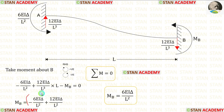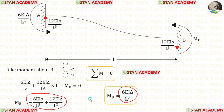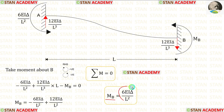When we add these two values, we will get 6EI·delta/L². For MB, we got a positive value. That means our assumption is correct — MB is acting in the anticlockwise direction.